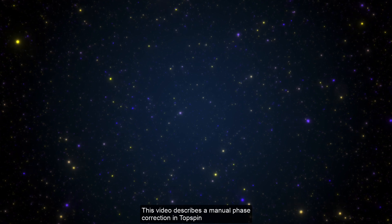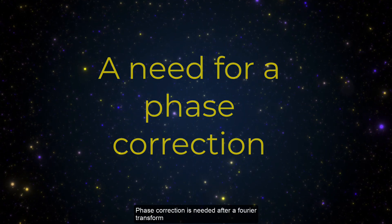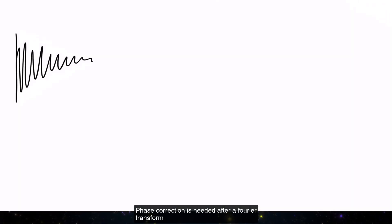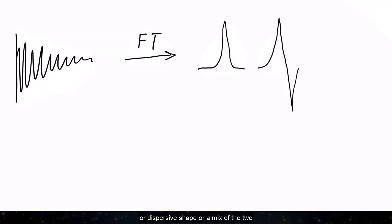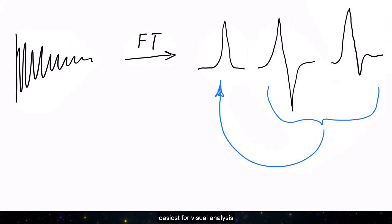This video describes manual phase correction in Topspin. Phase correction is needed after a Fourier transform, because the same peak may come out as absorptive shape or dispersive shape or a mix of the two. Phase correction converts the peak into its absorptive shape, easiest for visual analysis.